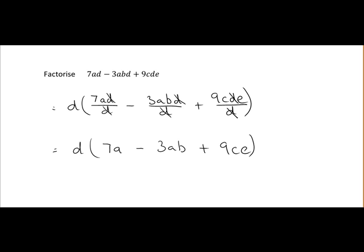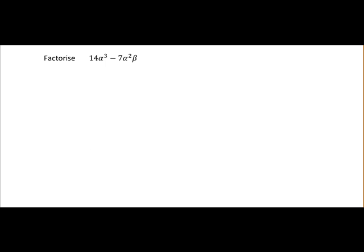If you ever wanted to check your answer you just multiply back in the d by 7a minus 3ab plus 9ce. You just multiply that back in and you should end up with what you started with. On to our next example.